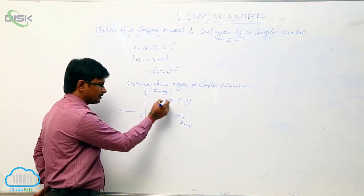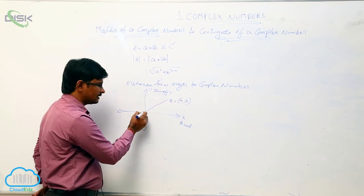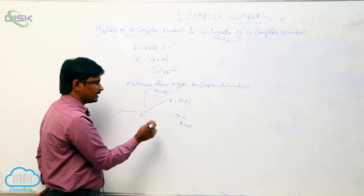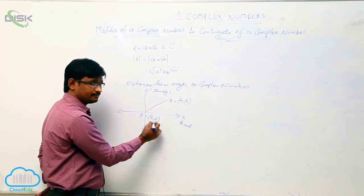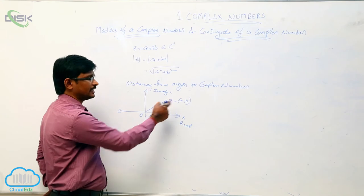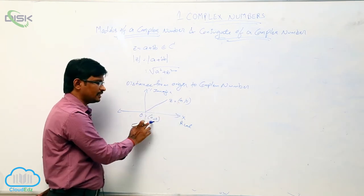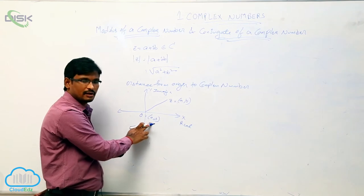If we join O and z, this is nothing but modulus of complex number. And here what is a, 0 comma 0. And this is a comma b, these two are in general coordinates, distance between these two is what, under root of a square plus b square.